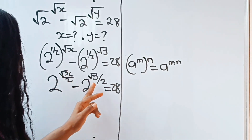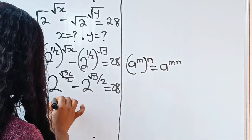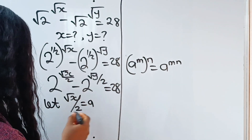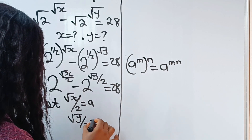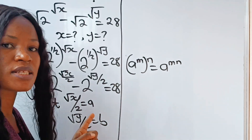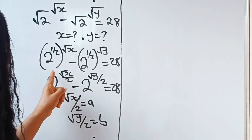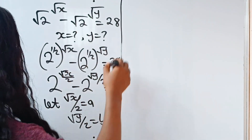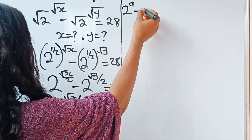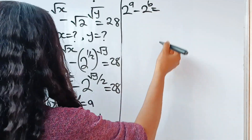Now we have root x over 2 and root y over 2. Let's call them something to simplify the equation. Let root x divided by 2 be equal to a, and root y divided by 2 be equal to b. So we can now rewrite this as 2 raised to the power of a minus 2 raised to the power of b is equal to 28.